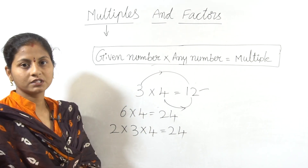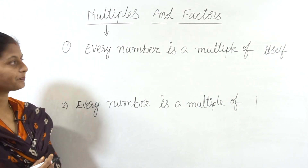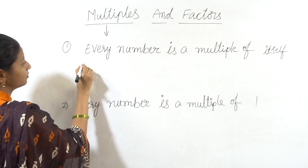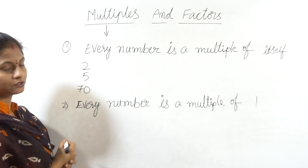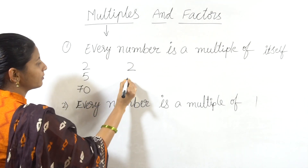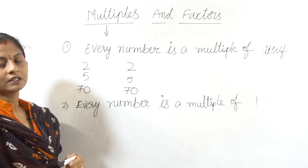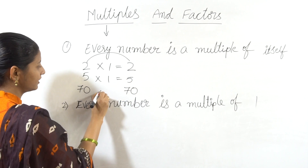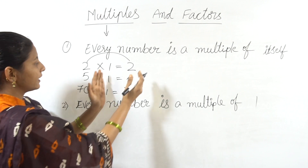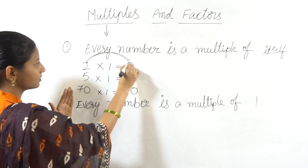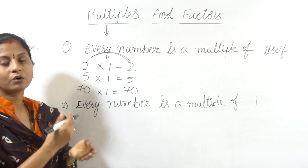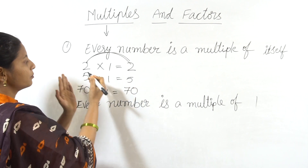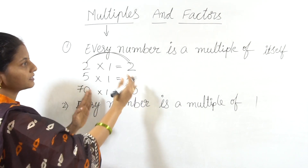Next, we will discuss facts about multiples. First fact: every number is a multiple of itself. For example, 2 is a multiple of 2, 5 is a multiple of 5, 70 is a multiple of 70. Every number is compulsorily a multiple of itself.